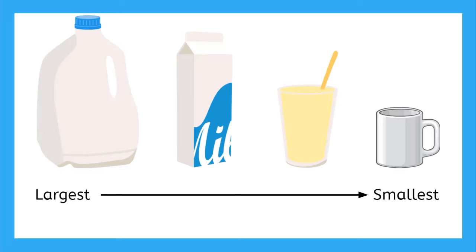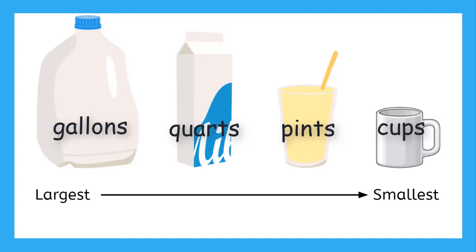In the United States, we use four main units to measure the volume of liquids, like milk or water. They are gallons, quarts, pints, and cups. Here we have them ordered from the largest volume to the smallest volume.